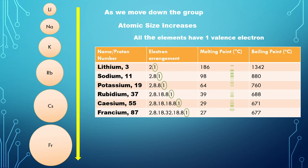Apart from this, the melting point of the element decreases as we move down the group. Similarly, you will notice the boiling point of the element also decreases as we move down the group.